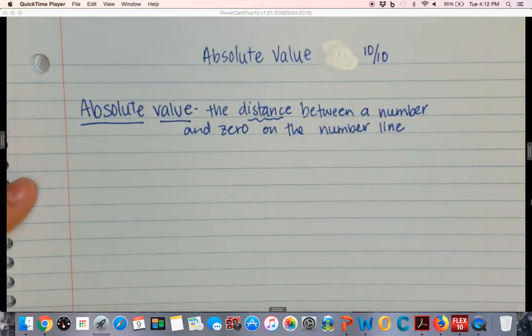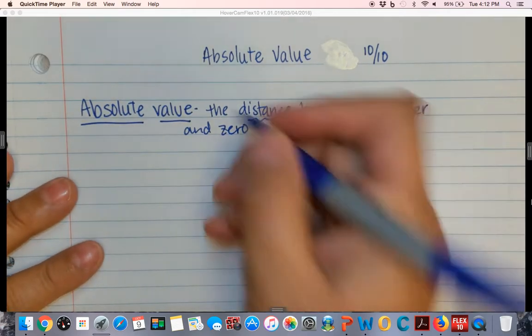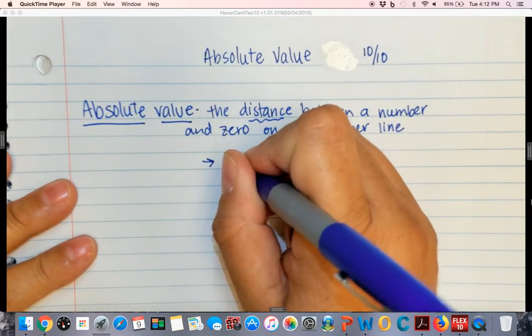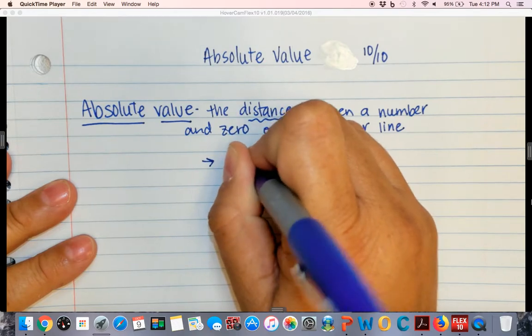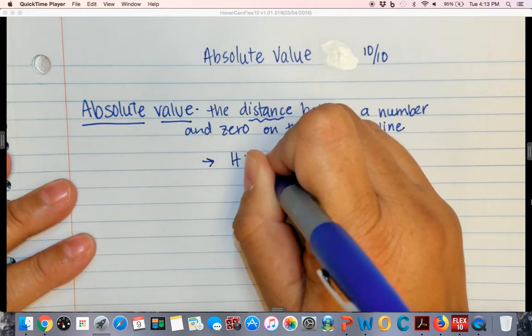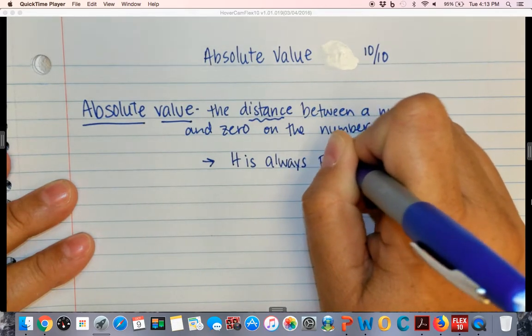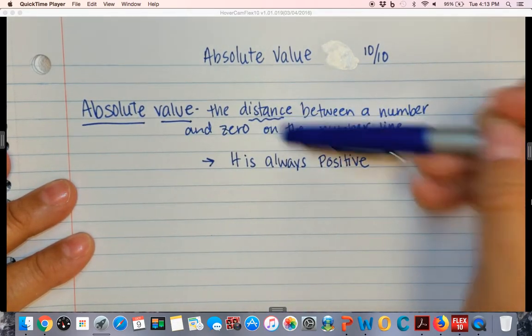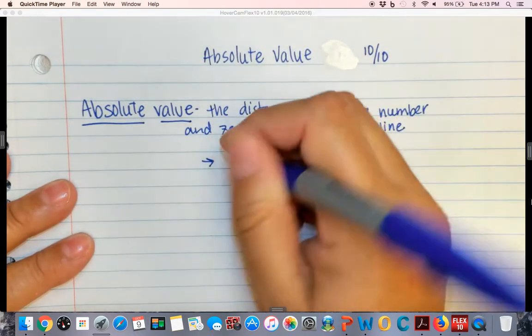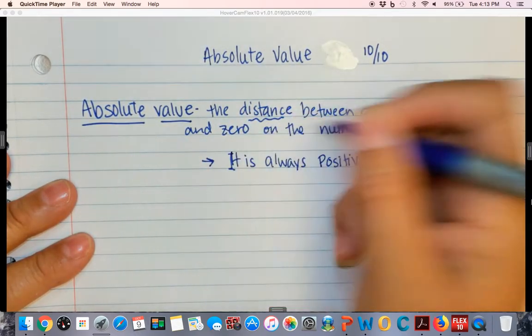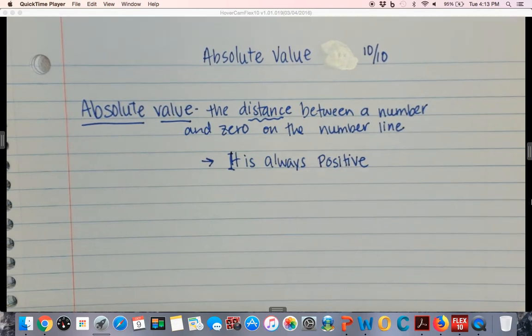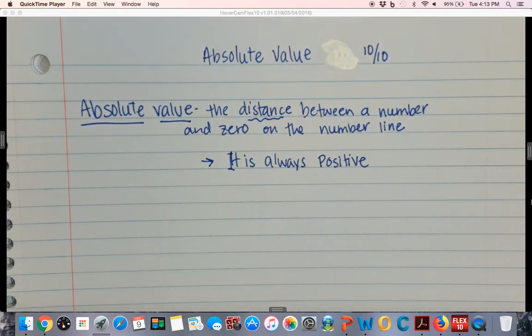Two things about absolute value. First thing is that it is always positive. Remember I was talking about distance. Distance is always positive. Even if the number is negative, the distance is positive. Because it's how far you are.